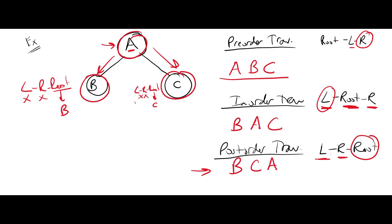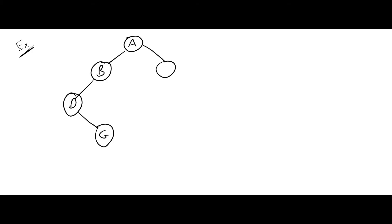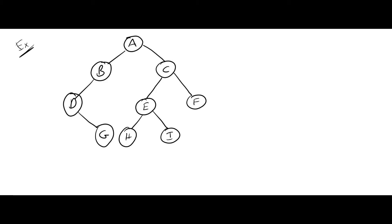This was the first example. We can write more complex trees and work on those so you can understand how to apply these traversals easily. Let me draw another tree — one more example. We have: A as root, B and C as children, D and G on the left side under B, and C with children E, H, I, and F.